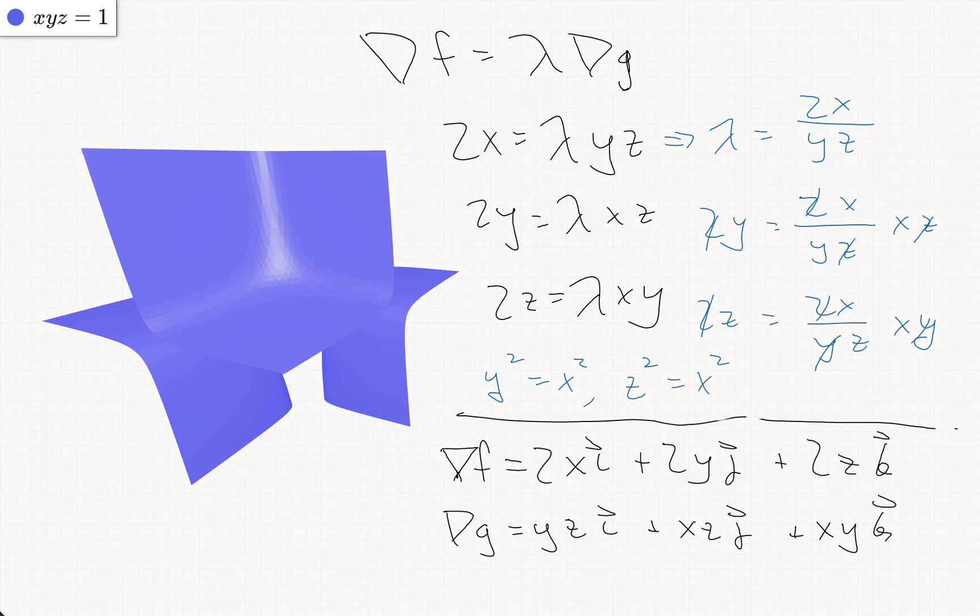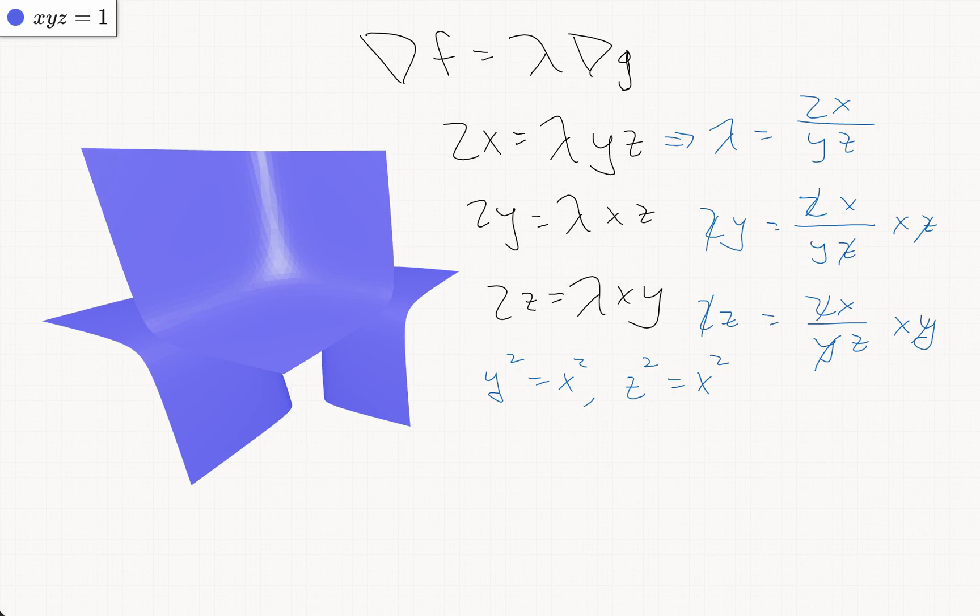So we get that y will be plus or minus x, and so will z. But since xyz is equal to 1, this implies that absolute value of x cubed is equal to 1, so x has to be plus or minus 1.